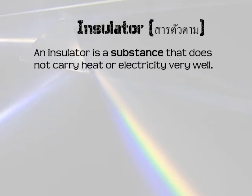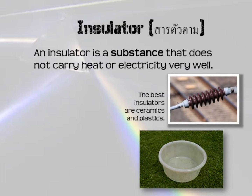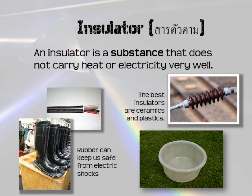An insulator is the opposite of a conductor — a substance that does not carry heat or electricity very well. The best insulators are ceramics and plastics. Ceramics are the sort of things you make your mug from, that you drink hot tea out of. Rubber is also a good insulator — it keeps us safe from electric shocks. If we wear rubber boots or cover wires in rubber, the electricity cannot hurt us.